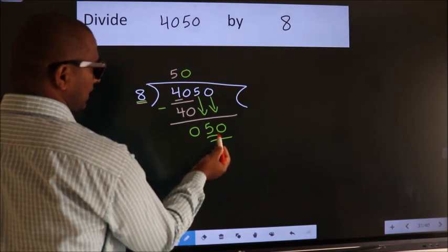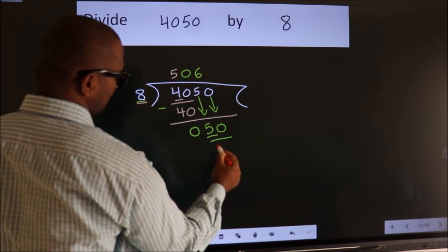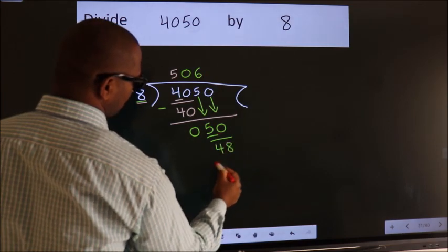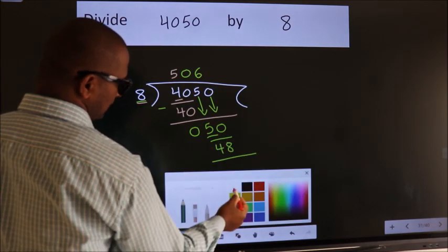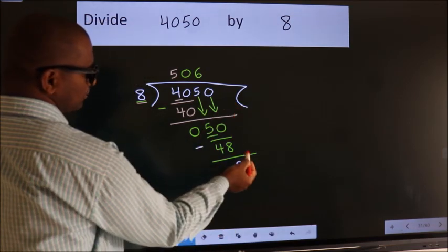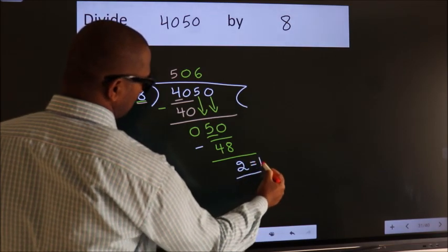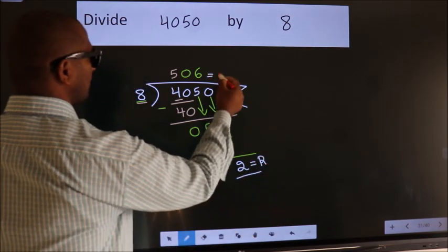A number close to 50 in the 8 table is 8 times 6, 48. Now, we subtract. We get 2. No more numbers to bring down. So, we stop here. This is our remainder. This is our quotient.